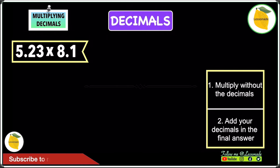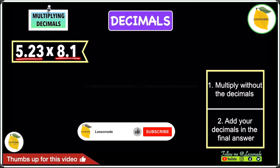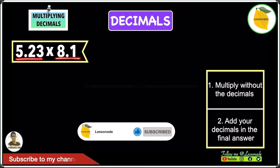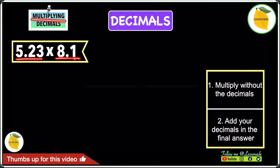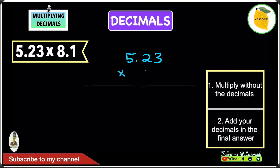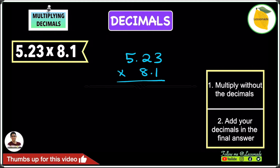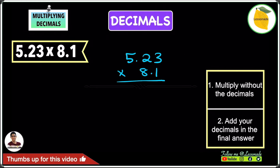Let's look at another multiplying decimals example: 5.23 times 8.1. We do the same thing as before — write those numbers out as if multiplying whole numbers. One thing to remember when multiplying decimals is that the decimal points do not need to be in line with each other. Now we can start multiplying.